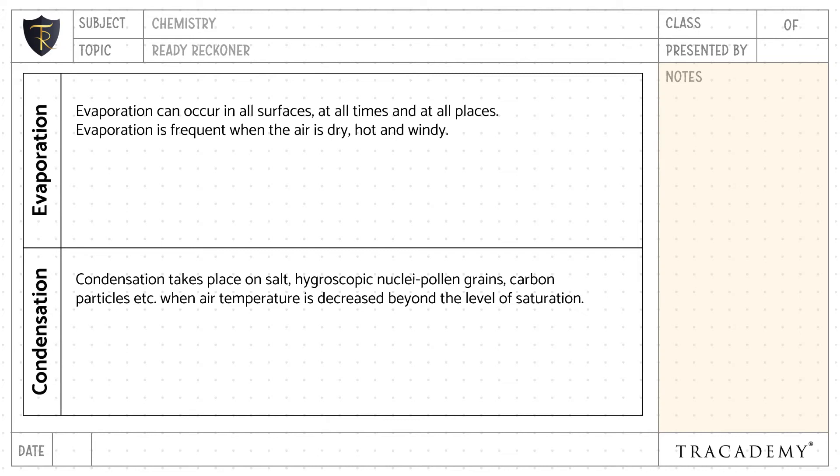Condensation takes place on salt, hygroscopic nuclei, pollen grains, carbon particles, etc. When air temperature is decreased beyond the level of saturation, condensation takes place.